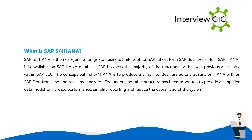What is SAP S/4HANA? SAP S/4HANA is the next generation go-to business suite tool for SAP — short form for SAP Business Suite for SAP HANA. It is available on the SAP HANA database and covers the majority of functionality previously available within SAP ECC. The concept behind S/4HANA is to produce a simplified business suite that runs on HANA within SAP Fiori front-end and real-time analytics. The underlying table structure has been rewritten to provide a simplified data model, increase performance, simplify reporting, and reduce the overall size of the system.